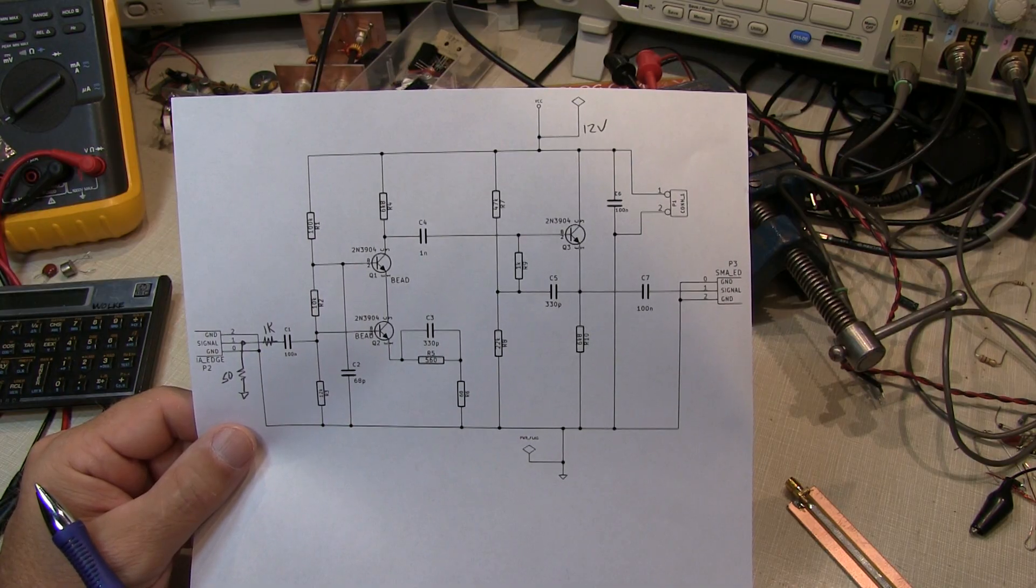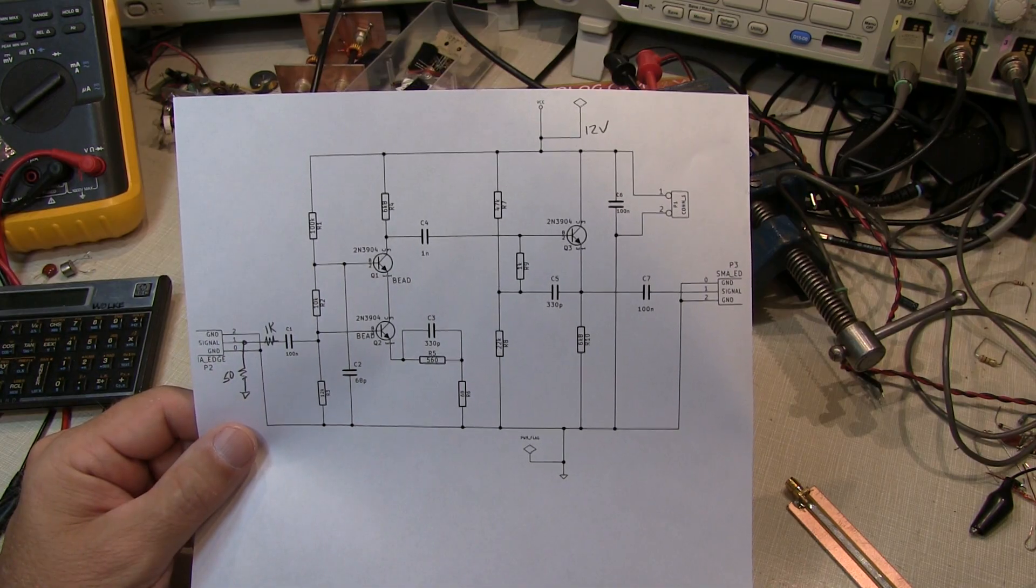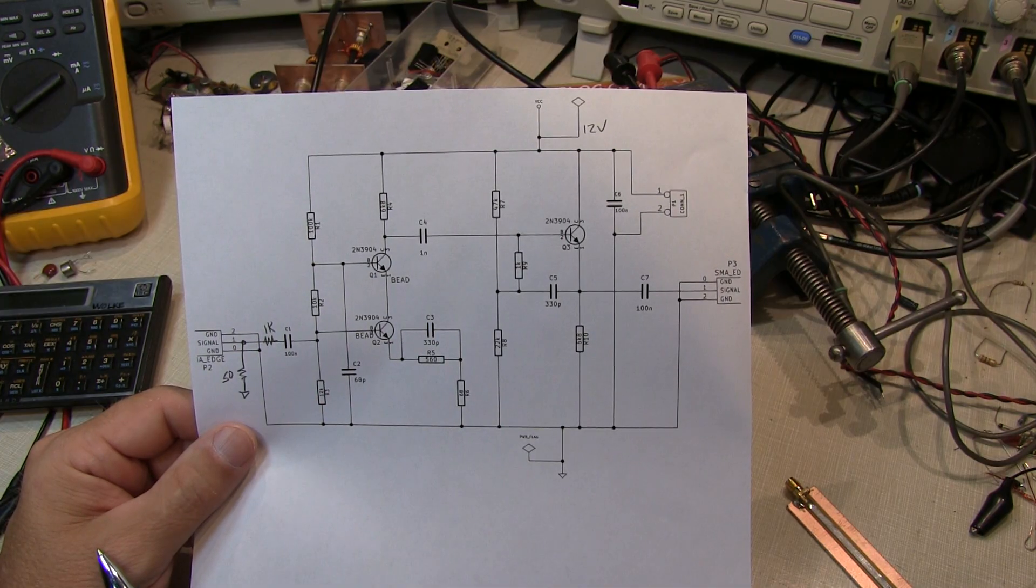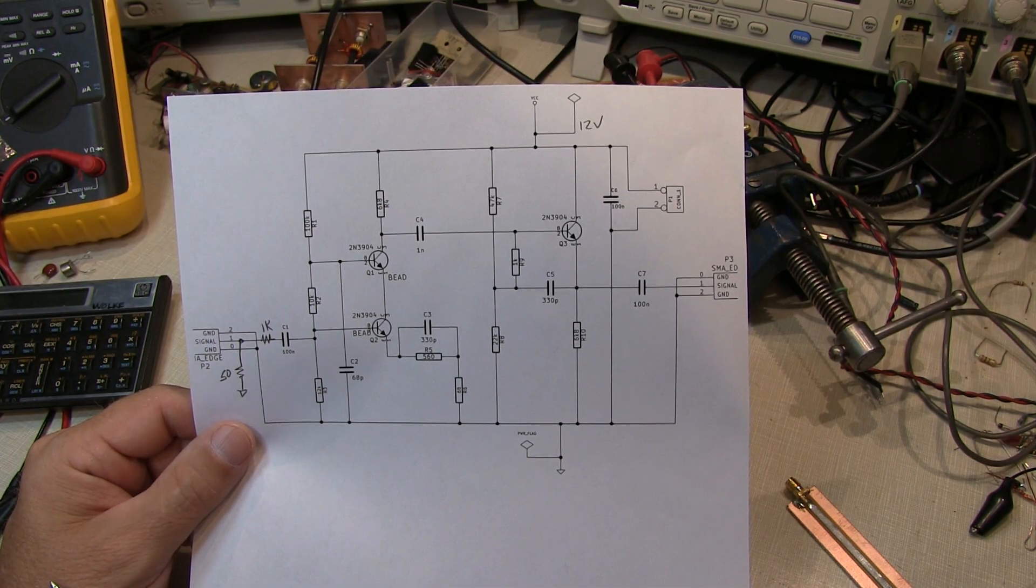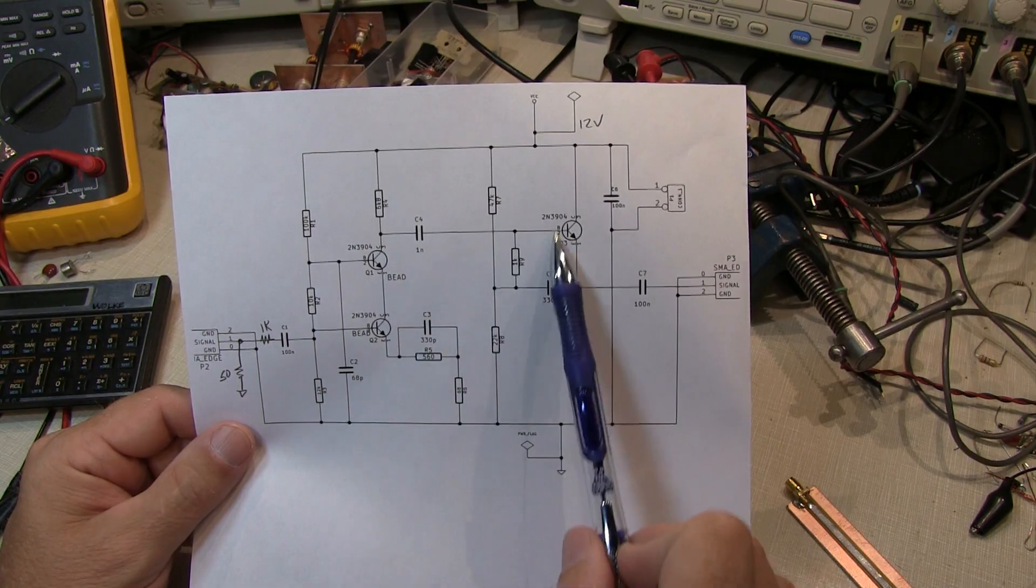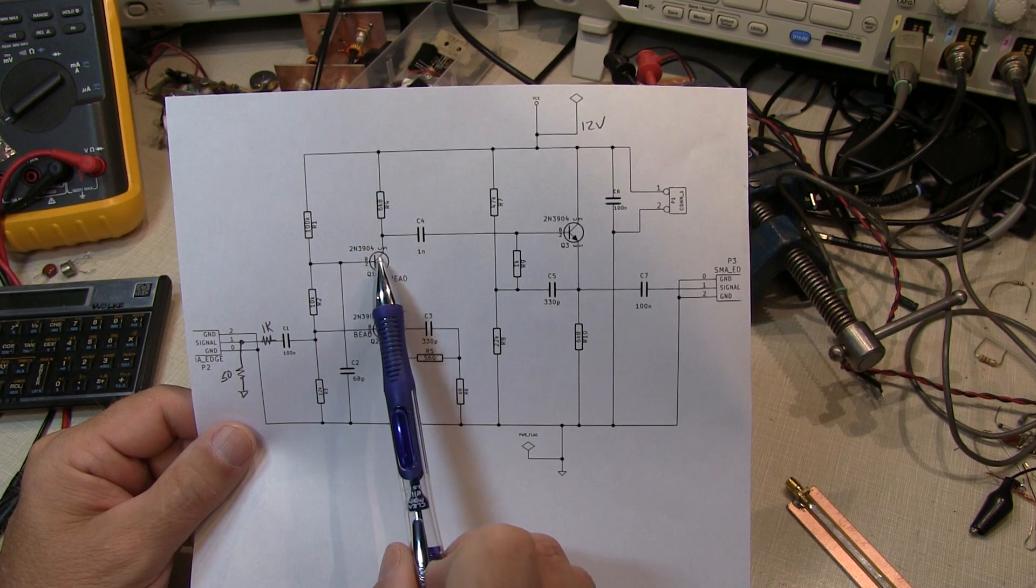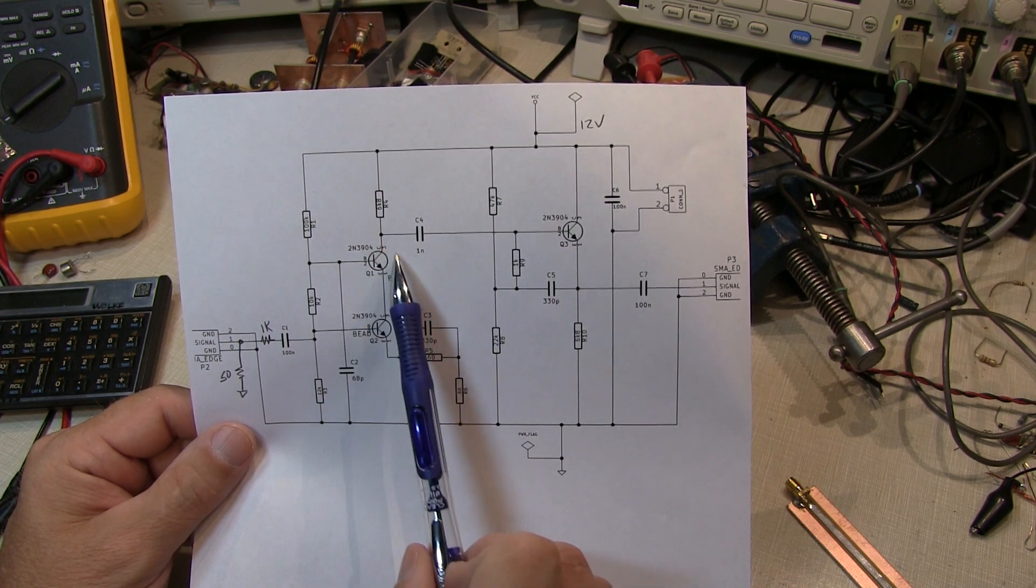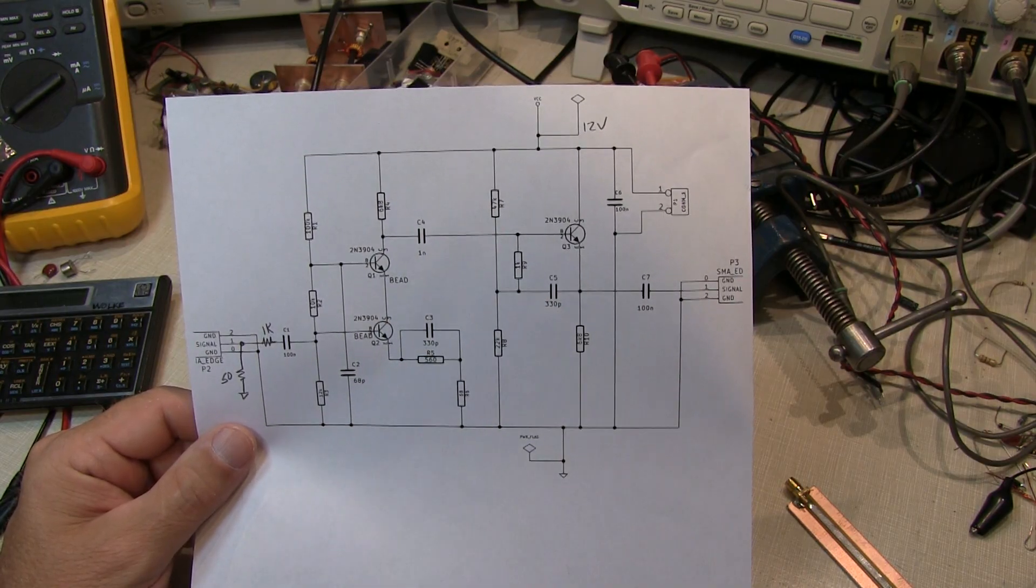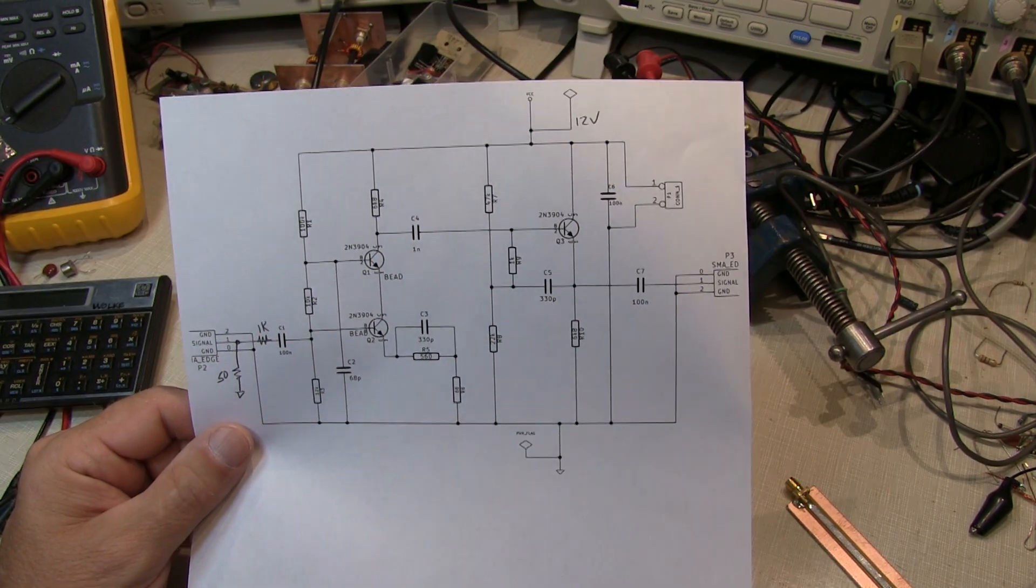This could be the output impedance of a crystal filter in the IF chain of a receiver. It could be just the output impedance of a previous pre-amplifier stage or something like that. So I just inserted that into the board here so we can take a look at the effect. So the first thing we'll do is turn this into just a common emitter amplifier with an emitter follower or common collector follower here. So I'm going to essentially remove Q1 and short it out. And we've basically reduced this now to a simple common emitter stage being buffered out.